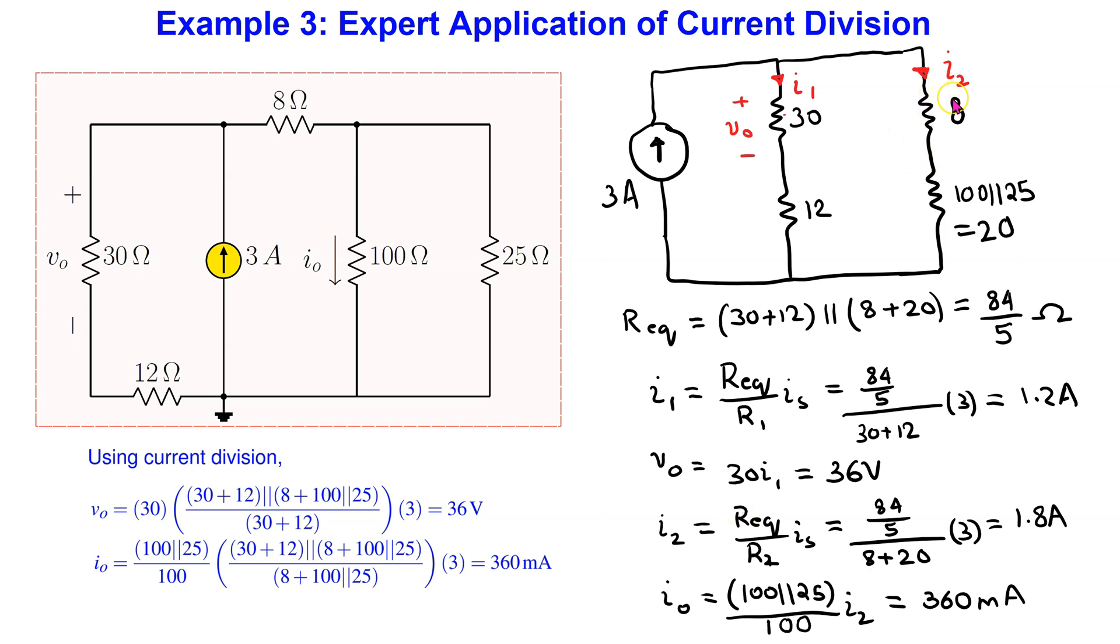we can see that branch current I2 forms a current divider with the 100 and the 25 Ohm resistors. Thus, we can use current division a second time to find I0.